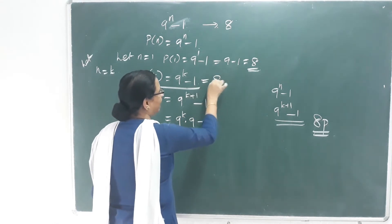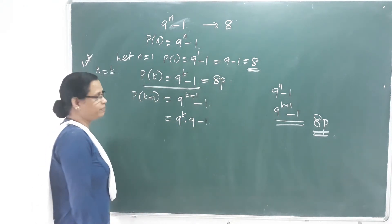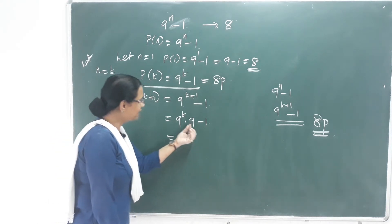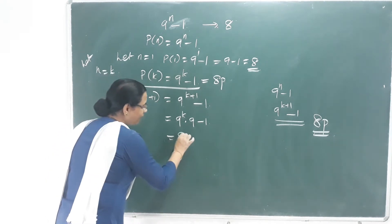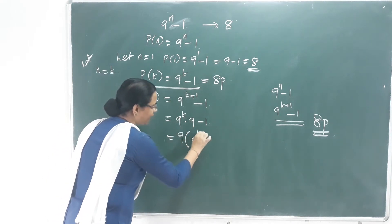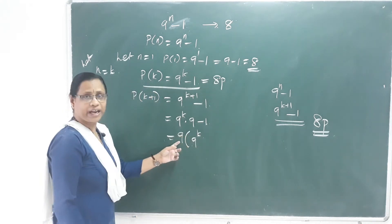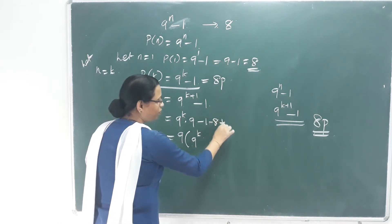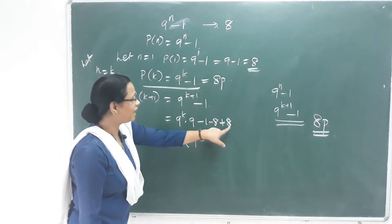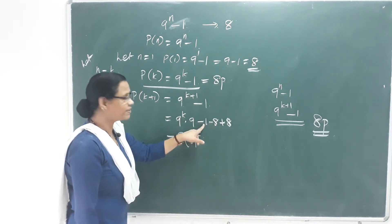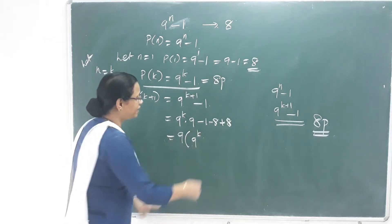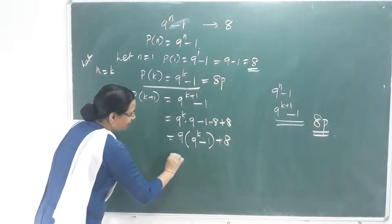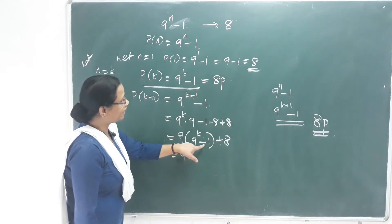This is equal to 8p. Now let us take 9 outside. If we take 9 outside, we have 9 raised to K. So what we do here is add and subtract 8, which doesn't change the value. Taking minus 9 outside, we get 9 plus 9i, giving us 9 into 9 raised to K minus 1.